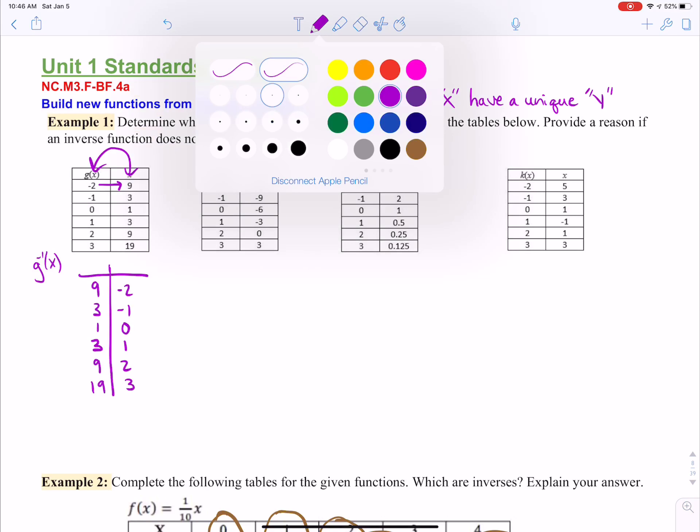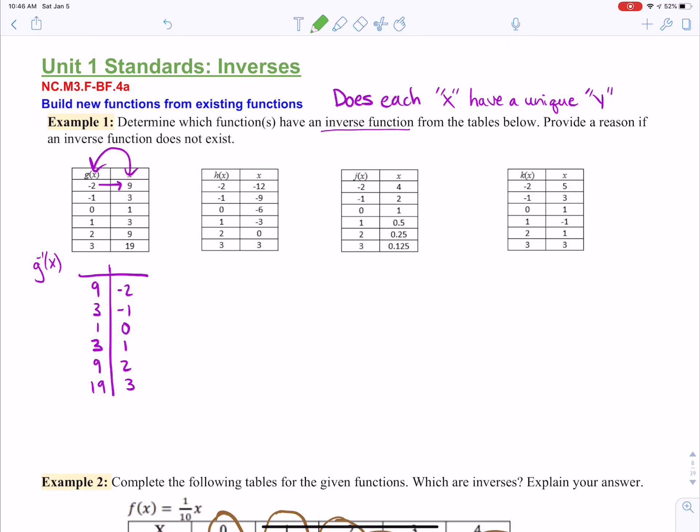All right, so now thinking of the same idea, each x has to have only one value for y. And the problem here is nine is paired up with negative two, and nine is also paired with positive two. Three is with negative one, and then it's also with positive one. So this one is definitely not a function.